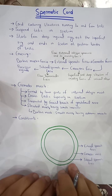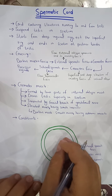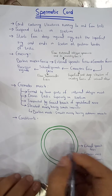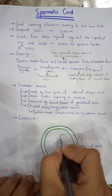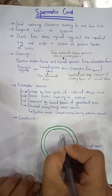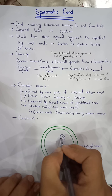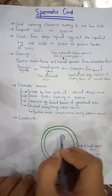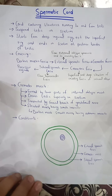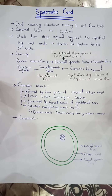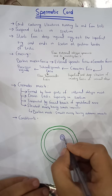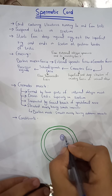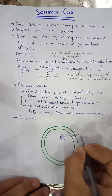Looking at the structures, the main structure is the ductus deferens (vas deferens). This is a tube about 45 cm long which is involved in sperm transport.